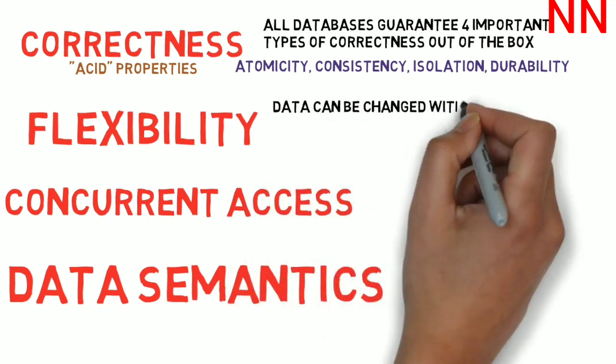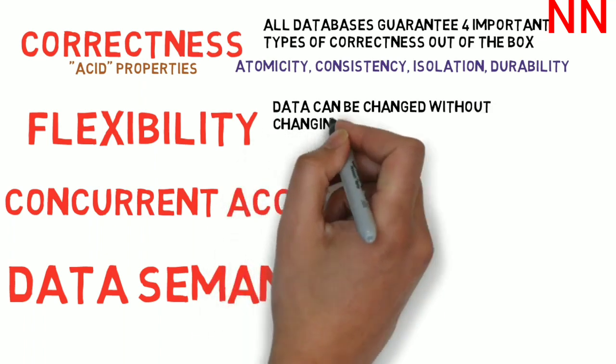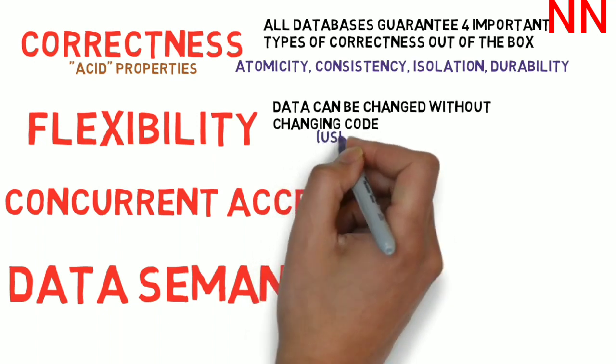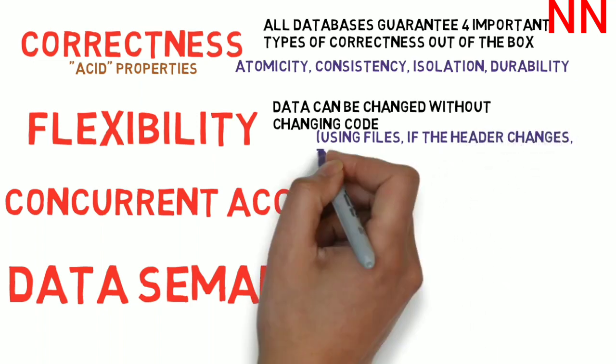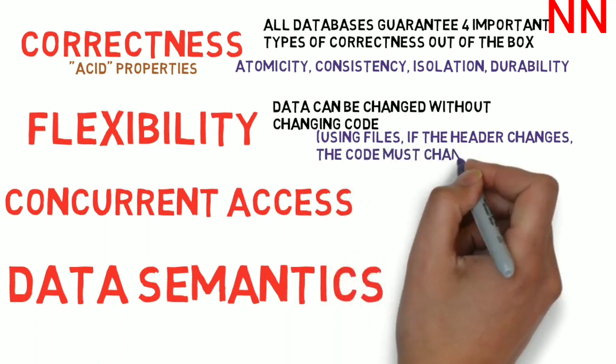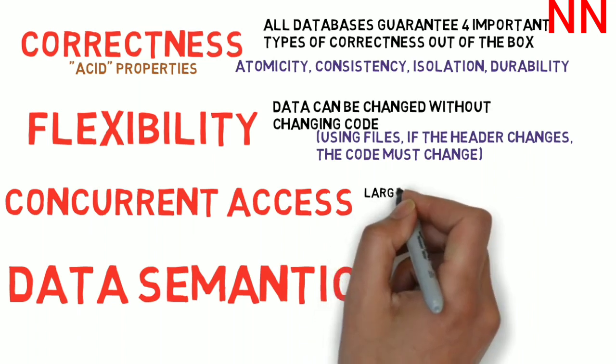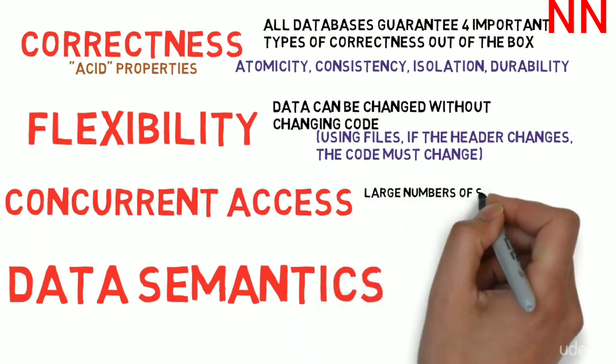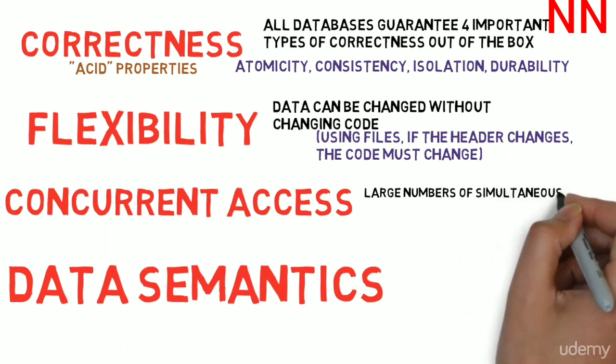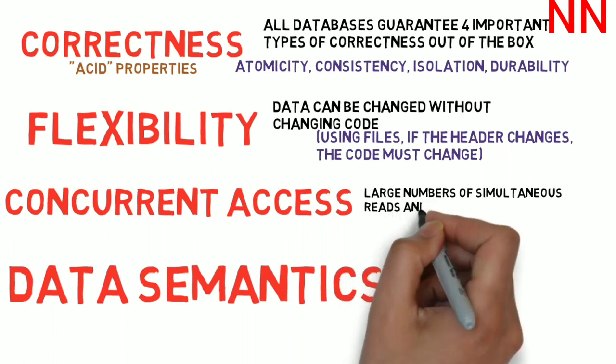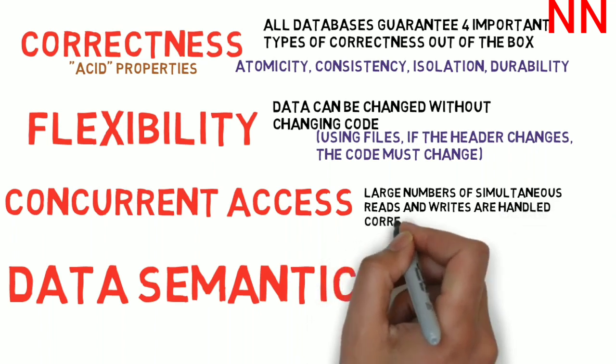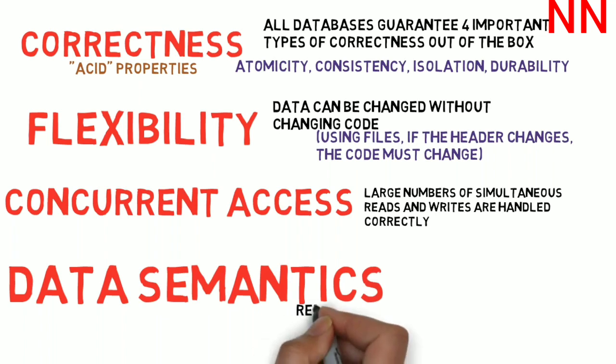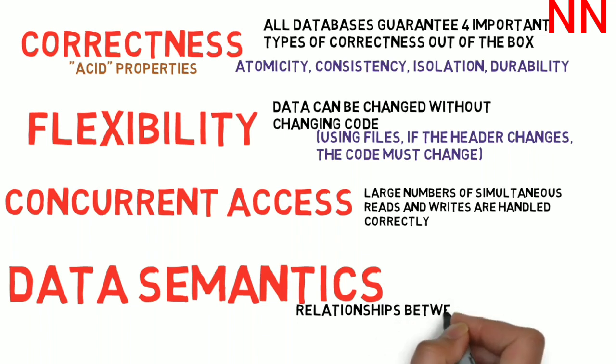Databases allow programmers a lot of flexibility. They can change data in the databases without changing the code. Whereas if you were using Excel files and each of the files had a different format or header, then you would have to write different pieces of code to handle each of those different types of files. But with databases, with the same piece of code, you can access the data in different ways. Databases are designed such that large number of simultaneous reads and writes can happen without compromising the correctness of the data. So again, the access is designed such that the ACID properties are maintained. This is basically done by locking the data so that nobody can read it while something is being written to it.